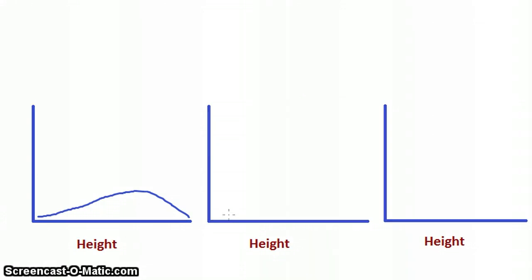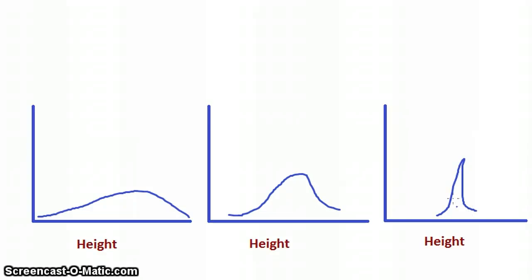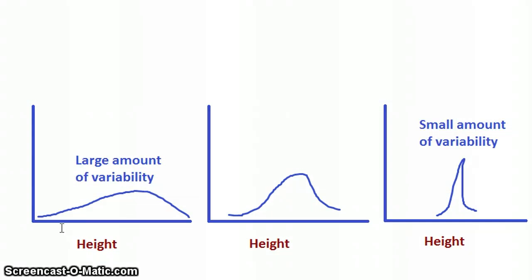Alternatively, I might have recorded every single student's height and found something that looks more like this, where it's a little bit closer together, or perhaps more extreme. I might have measured all the behavioral statistics students' heights and found that they were closely clumped. So looking at these histograms, we see one where it has a lot of spread, a large amount of variability, a medium amount of spread, or all the scores are close together.